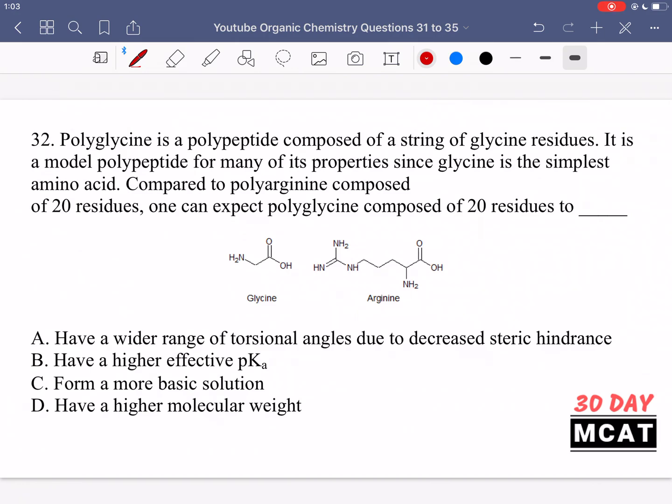In question 32 it says polyglycine is a polypeptide composed of a string of glycine residues. It is a model polypeptide for many of its properties since glycine is the simplest amino acid. Compared to polyarginine composed of 20 residues, one can expect polyglycine composed of 20 residues to blank.